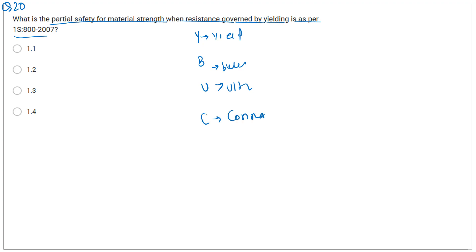For yielding, the partial safety factor is 1.1, for buckling, 1.1, and for ultimate stress, 1.25. Up to this clear.